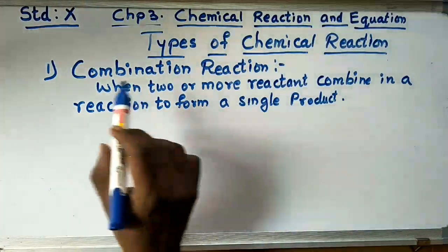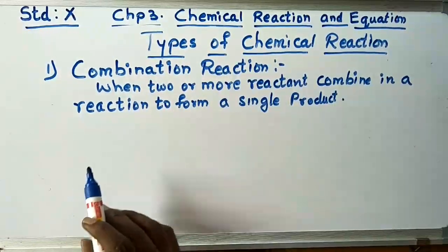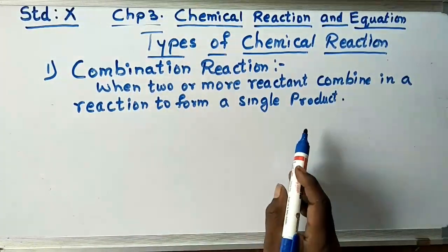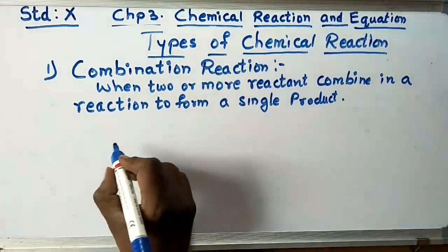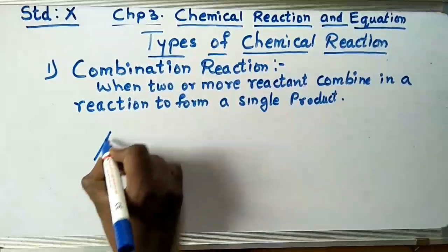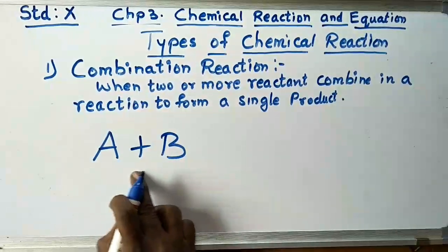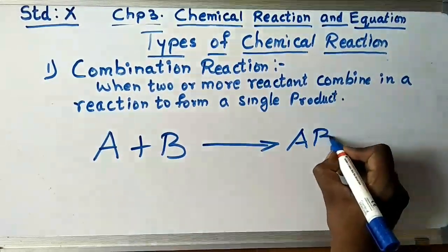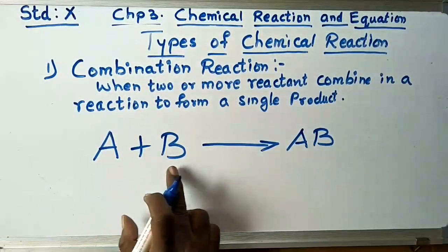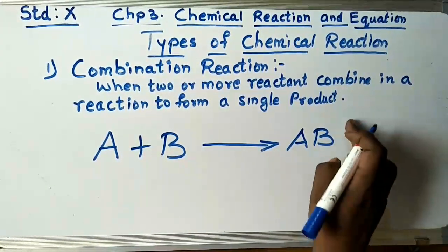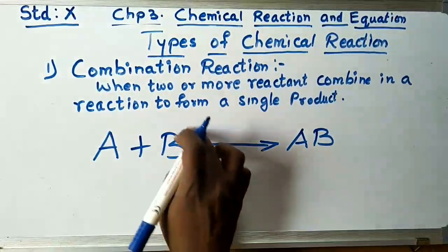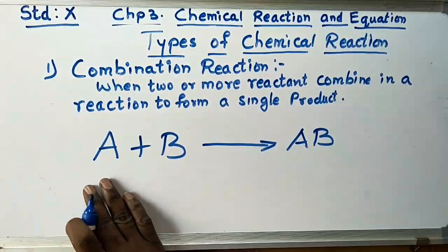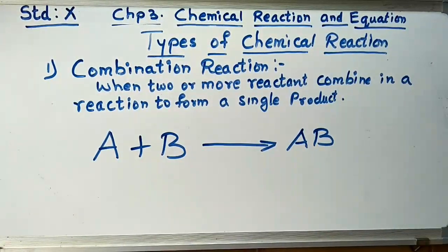The first type of chemical reaction is combination reaction. What is a combination reaction? When two or more reactants combine in a reaction to form a single product, we call this a combination reaction. For example, if we take two reactants A and B, when these two reactants combine they form a single product. On the left side there are two reactants, but on the right side there is only one product.